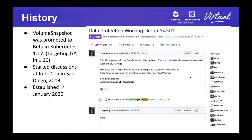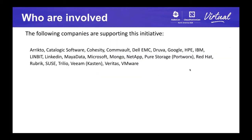In Kubernetes, volume snapshot was introduced as an alpha feature in 1.12, promoted to beta in the 1.17 release, and is targeting GA in 1.20. This allows us to backup and restore a volume based on volume snapshots. However, many things are still missing. At KubeCon in San Diego at the end of last year, we discussed this and decided to form a working group to focus on this area. The working group was formally established in January this year, and we have been holding bi-weekly meetings since then. Many companies — both backup vendors and storage vendors — have been supporting and participating in this working group.